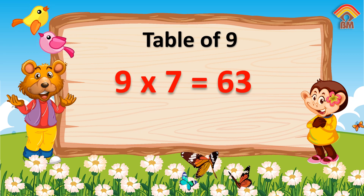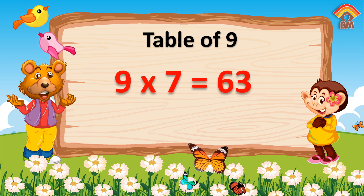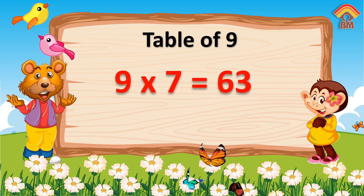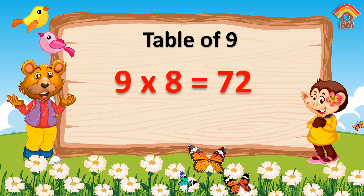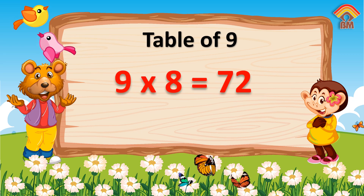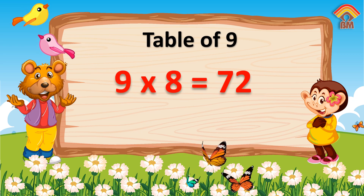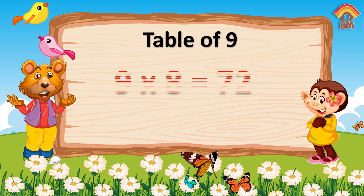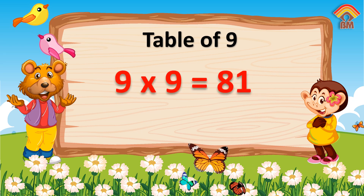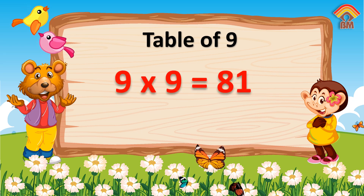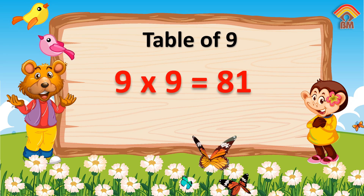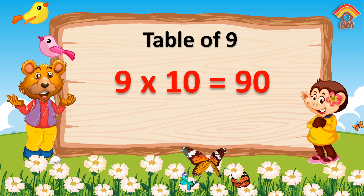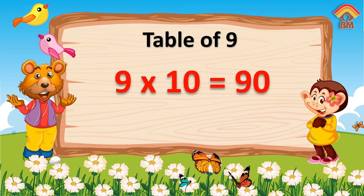Nine fives are forty-five. Nine sixes are fifty-four. Nine sevens are sixty-three. Nine eights are seventy-two. Nine nines are eighty-one. Nine tens are ninety.